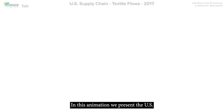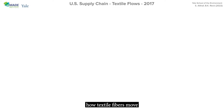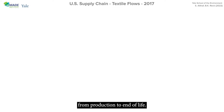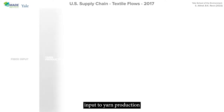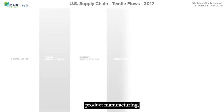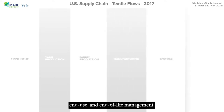In this animation, we present the U.S. textile cycle in 2017 to illustrate how textile fibers move along the value chain from production to end-of-life. The life cycle starts with fiber input to yarn production and includes fabric production, product manufacturing, end-use, and end-of-life management.